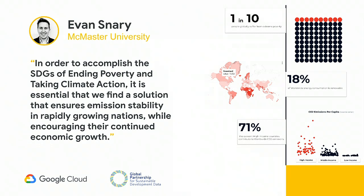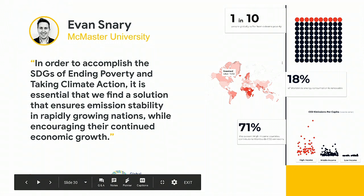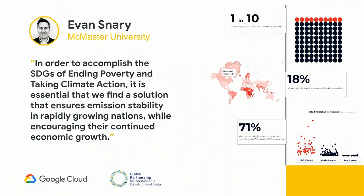Evan is a commerce student at McMaster University. He focused on SDG 1, no poverty, and SDG 13, climate action. He walked through the story of how, as middle-income countries begin to catch up with high-income states, resource consumption and CO2 contributions exponentially increase. He used data to back up his recommendations and provided useful ways to engage on these issues.